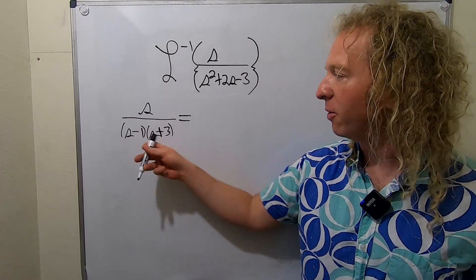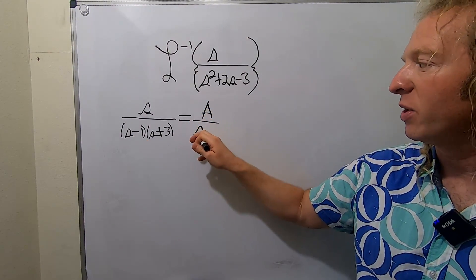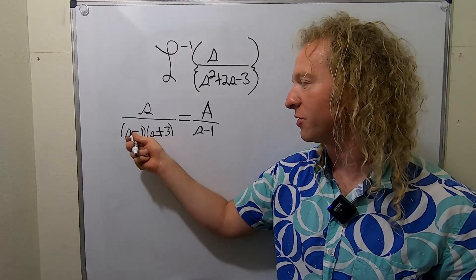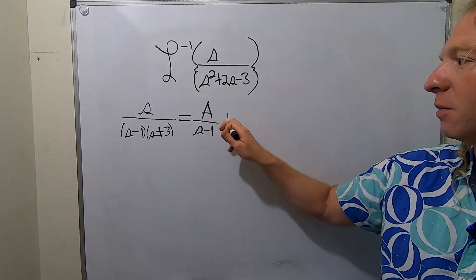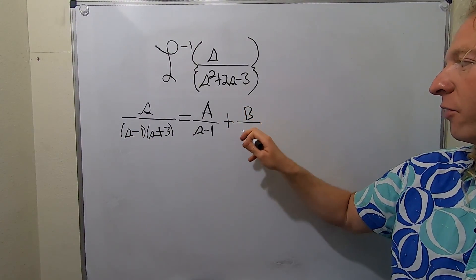So this is going to be A over s minus 1, and we can do that because we have distinct linear factors. Whenever these are different, that's how it works. Plus B over s plus 3.